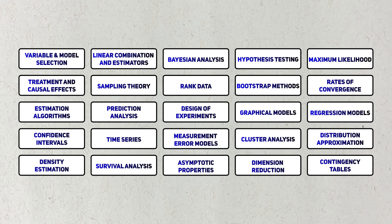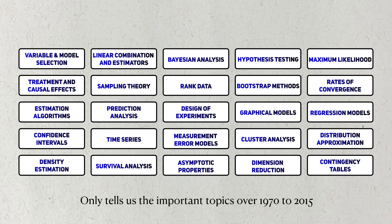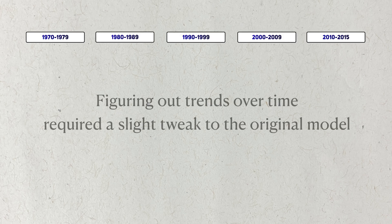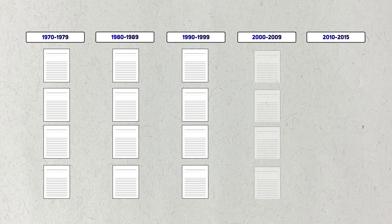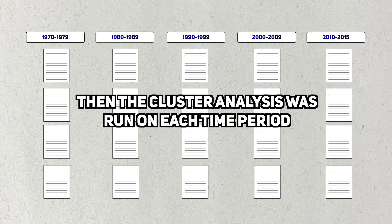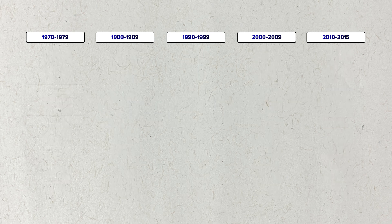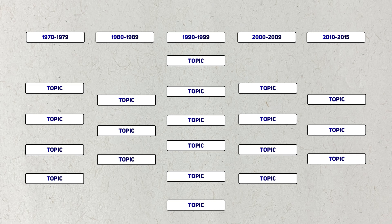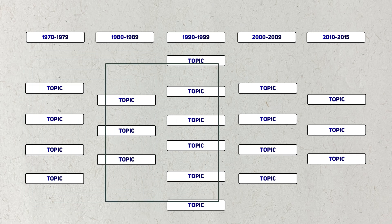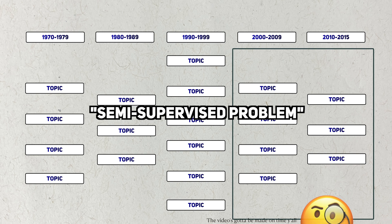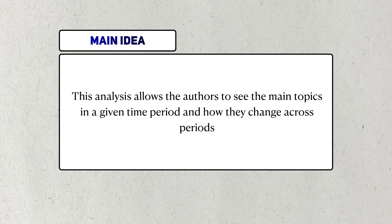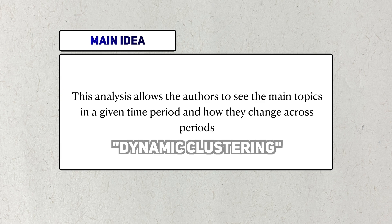So these are the results for the first analysis. But this analysis doesn't tell you how these topics may have changed in importance over time. For their second analysis, the authors modify their model ever so slightly, and it allows us to answer this question. The authors divide the papers into roughly equal time periods, then run the clustering analysis on each period to get the leading topics for each one. The number of leading topics in each period is not assumed to be the same across time, and the authors adjust their model to try to predict how topics in one period will evolve into topics in the next. The key takeaway is that this analysis, which they call dynamic clustering, identifies leading topics and how they change over time.